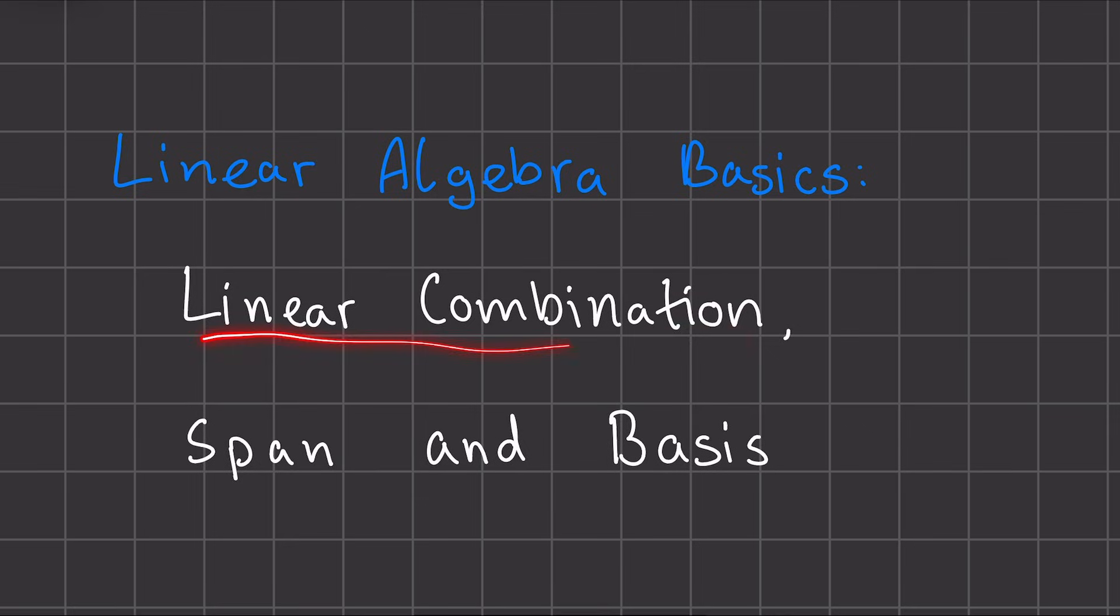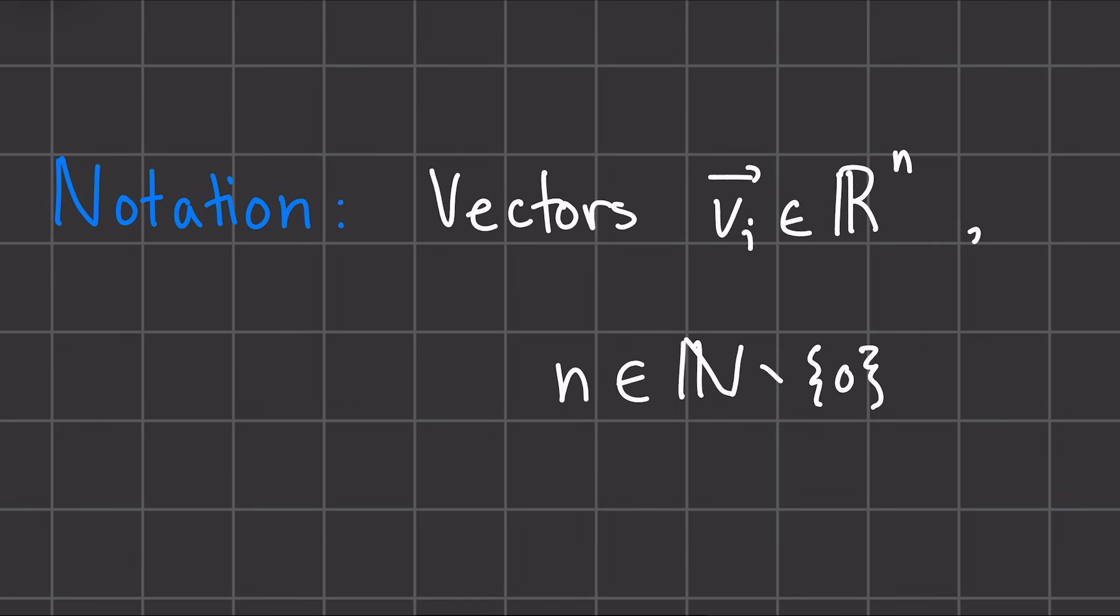First, we'll take a look at linear combinations, but before we do that, we will quickly go over the notation we'll use. First, in this video, vectors are notated with this arrow on top. So we have this vector v_i and we know it's a vector because of this arrow on top.